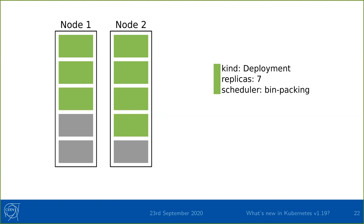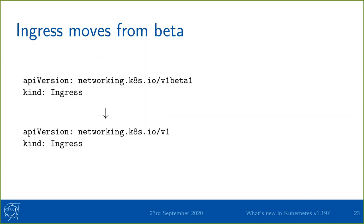That's the end of the illustration. Moving on to other things in 1.19: ingress has moved from being a beta API to a v1 API. It's been in beta since about version 1.3 — a long time. There aren't too many changes going from v1beta1 to v1, and nothing urgent because v1beta1 will still be around until Kubernetes 1.22 or 1.23, so you don't need to do anything yet.